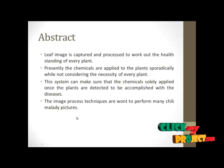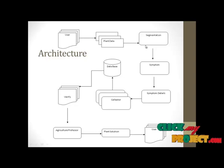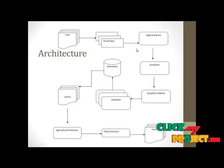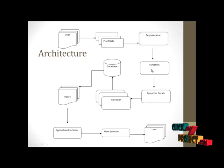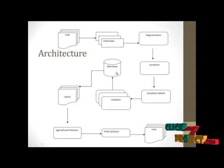Let us see the flow diagram. The user inputs plant data. The segmentation process is used for Chilli plant images, then symptom analysis — symptoms are captured for the field worker or user. Collecting information delivers the symptom details to the collector. The database receives the data for the verification process, and it communicates globally for integration.